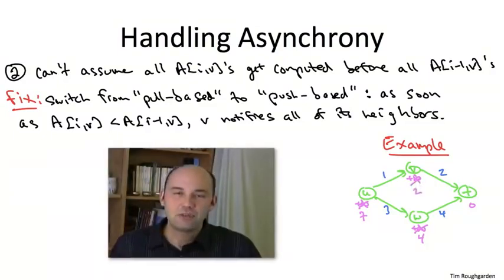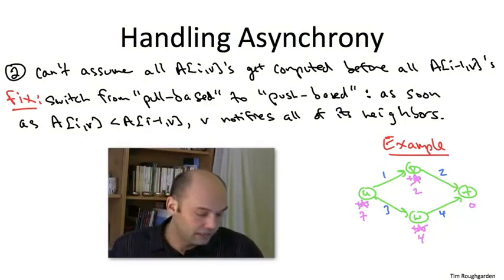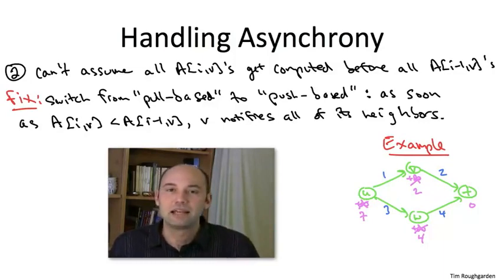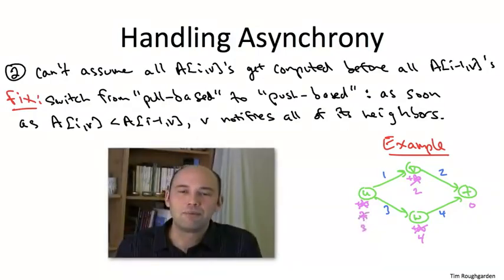V, now that it has a revised estimate, it's responsible for notifying all of its neighbors, so it tells U, it says, hey, U, I can get to T on a path of length only two. And then U says, well, hey, great, that's actually an improvement. My old path had length seven. I can get to the node V with cost only one. And V tells me you can get the rest of the way with cost only two. So that gives me a path of length three all the way to T.